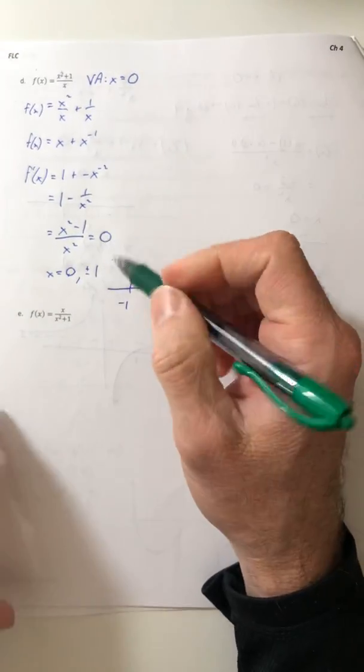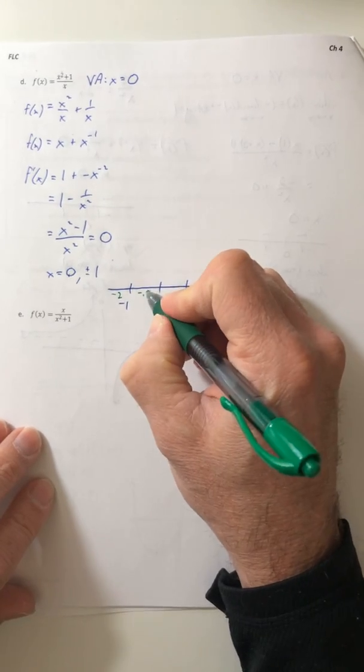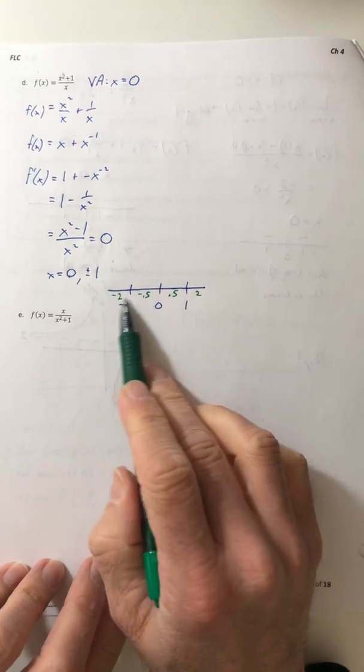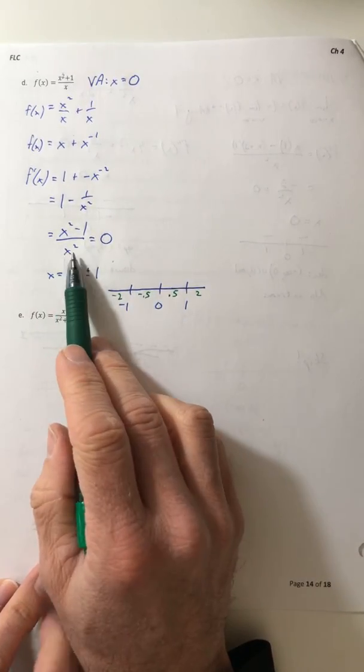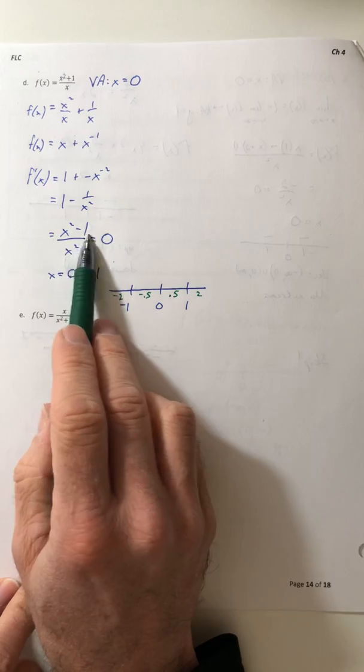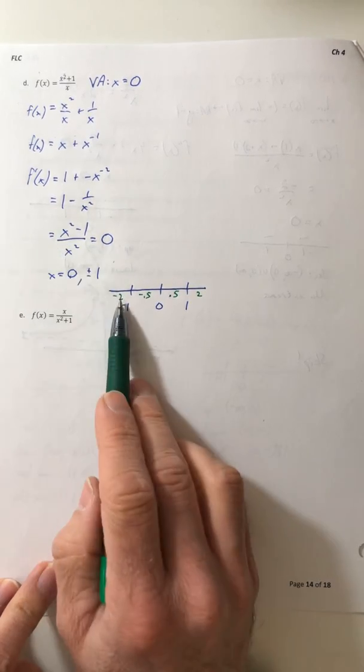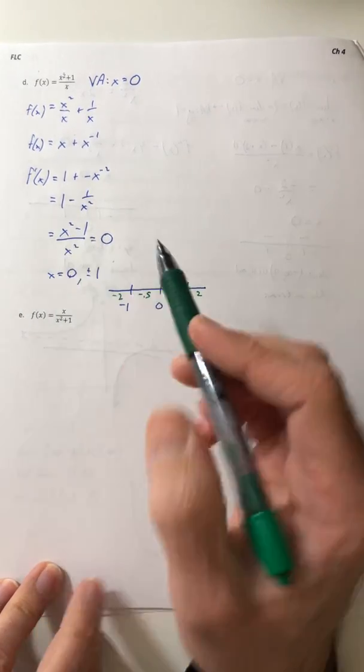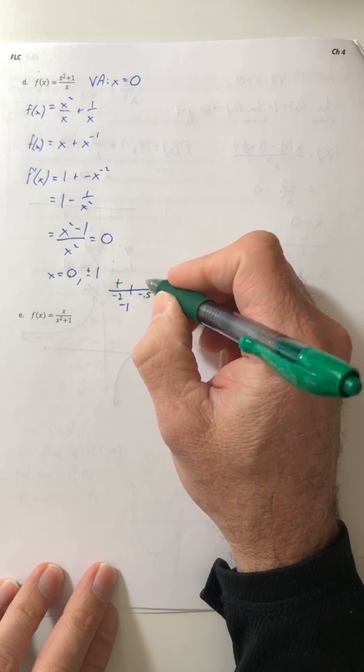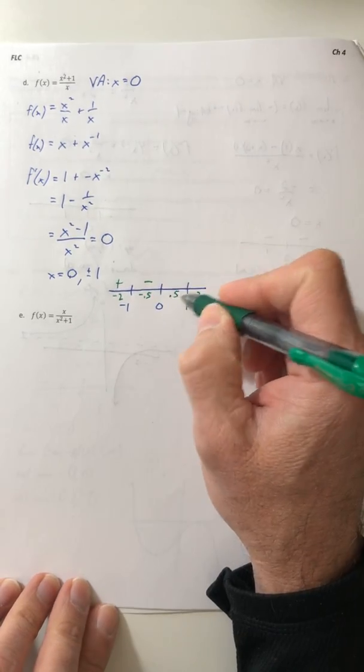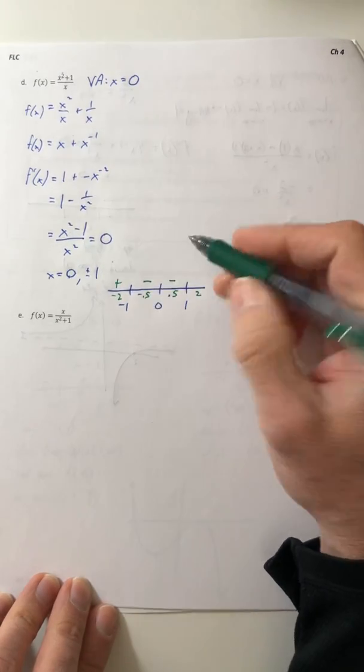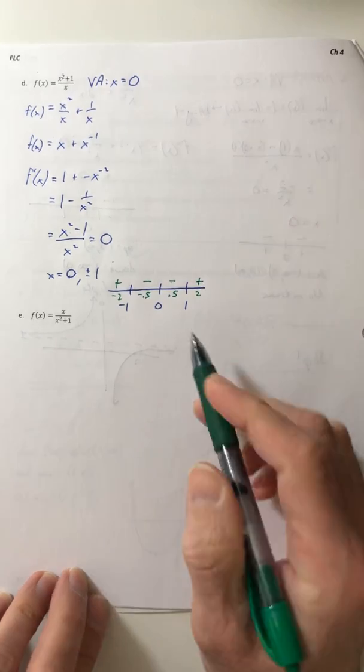Okay, so let's use some test numbers. So let's go with negative two, negative 0.5, 0.5, and positive two. So I'm going to plug these into the derivative. And if you notice, the denominator is just an x squared. So the denominator is going to be positive no matter what you do. So it's really just dependent upon the top. So if I plug in the negative two, that's going to come out as a positive. Plug in the negative 0.5, that comes out as a negative. And if I plug in the positive 0.5, that also comes out as a negative. And the positive two goes back to positive.